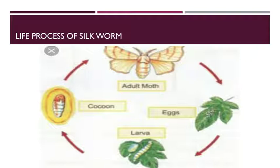Now, production of silk. The raising of silk worms in order to obtain silk is called sericulture. It is a slow and gradual process. There are many species of silk worm that can produce silk, but among them, Bombyx mori is the most widely used.